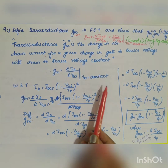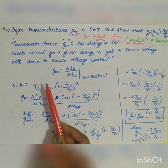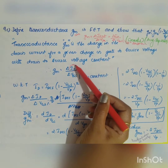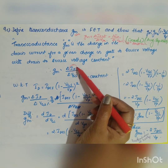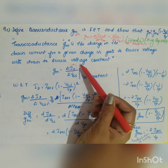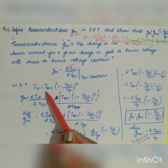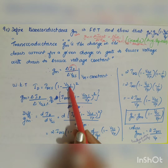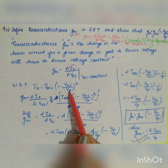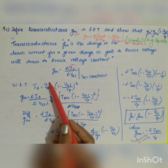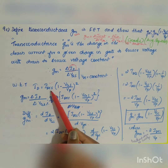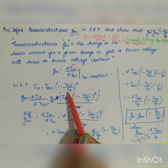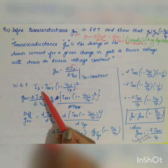We already know the current equation of the FET given by Shockley's equation: id equals idss into 1 minus vgs divided by vp, the whole square, where idss is the maximum drain current or saturation drain current, and vp is the pinch-off voltage.